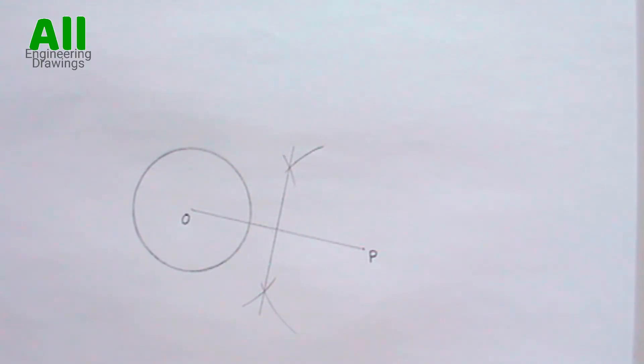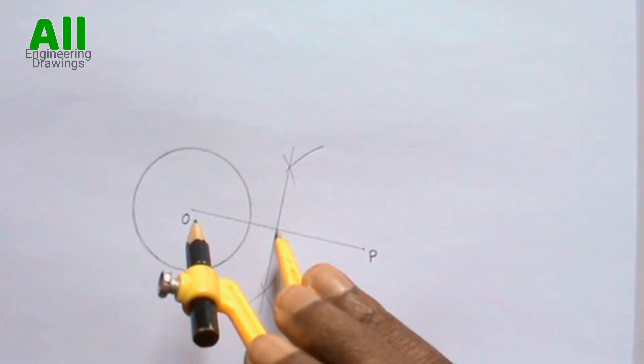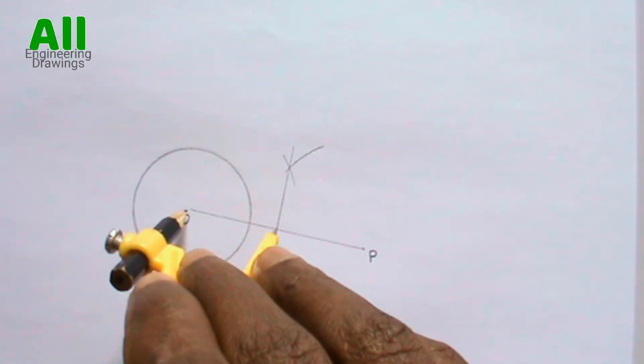Now, place your compass on the point where the bisector intersects OP. Then extend your compass in such a way that your pencil is on point O.